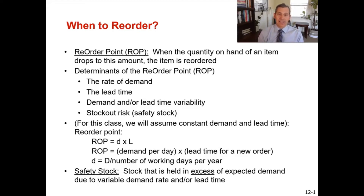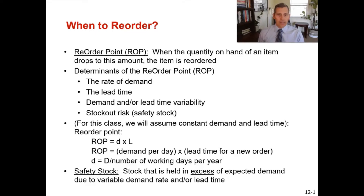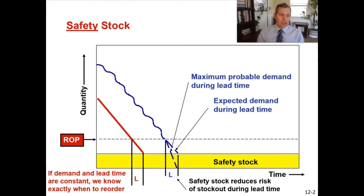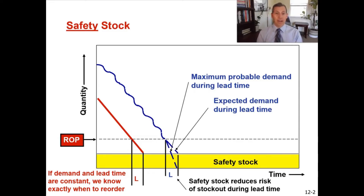Safety stock is the stock held in excess of expected demand due to variable demand rate and/or lead times. Earlier in the economic order quantity discussion, I showed you that chart where everything you order can be delivered and received on time — if your demand is constant and your lead time is constant with no variability, you do not need to work safety stock into the equation. But that's not real life. A vendor might say it takes seven days and it takes eight or nine, or the package gets lost, or the port goes on strike.